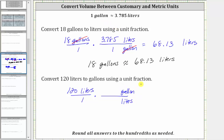Because the conversion is one gallon is approximately 3.785 liters, the unit fraction is one gallon over 3.785 liters. Because we have liters divided by liters, liters simplify out, leaving us with gallons. So now we multiply, and we know the units are gallons.